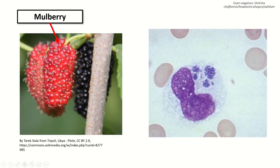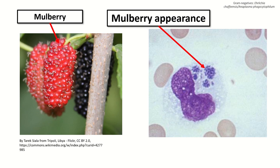Here's a mulberry — you can see this is the mulberry appearance of the cytoplasmic inclusions in a patient infected with... Which one is this — is this Ehrlichia or Anaplasma? This is most definitely Ehrlichia, because that's a monocyte.